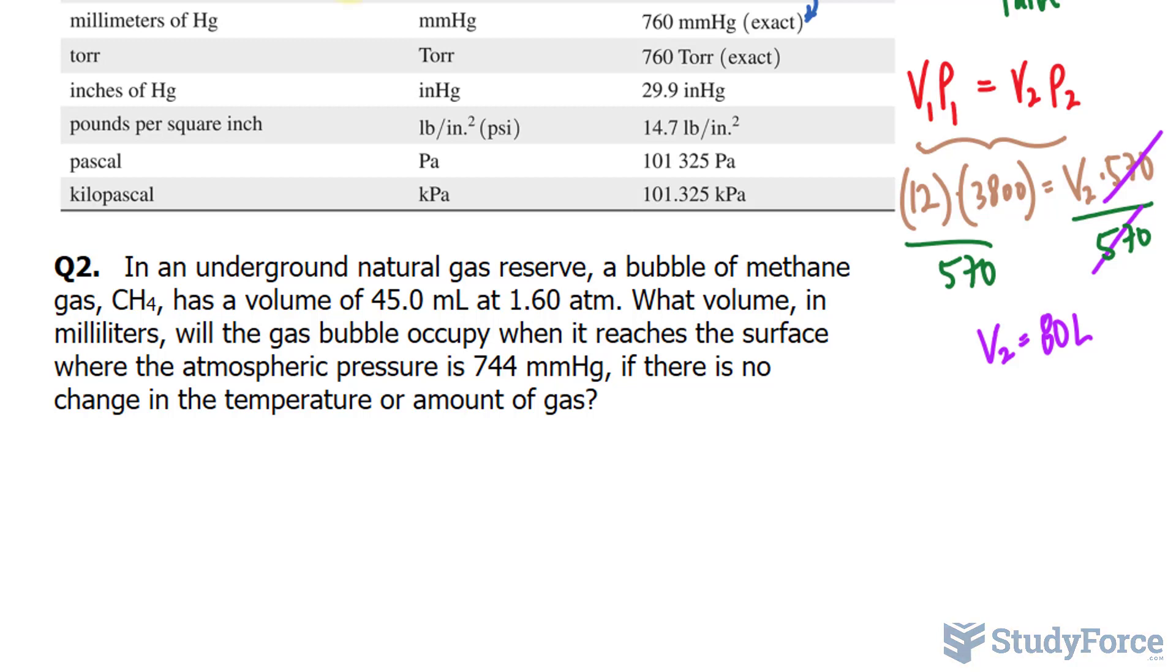This, just like in question number 1, uses the same formula. So V1P1 is equal to V2P2. And just for a change, I will modify this number, which is in mmHg, into atmosphere.